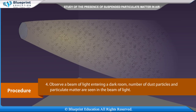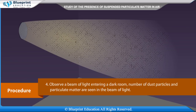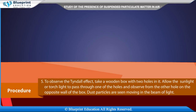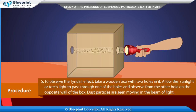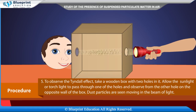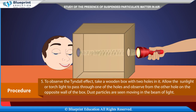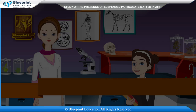Observe a beam of light entering a dark room — a number of dust particles and particulate matter are seen in the beam of light. To observe the Tyndall effect, take a wooden box with two holes in it. Allow sunlight or torch light to pass through one of the holes and observe from the other hole on the opposite wall of the box. Dust particles are seen moving in the beam of light.